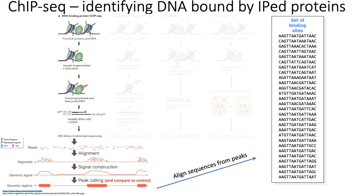Then, using an antibody — typically a monoclonal antibody that you've made to target your particular transcription factor of interest — you can pull down DNA fragments that are bound by your transcription factor of interest, which you can then purify and sequence.